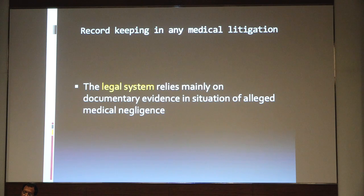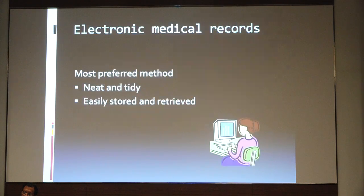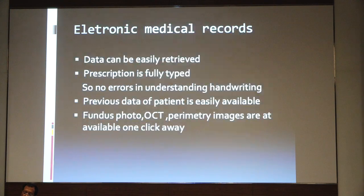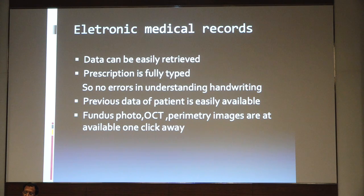There are various ways to keep records. The manual method occupies a large area and makes retrieval difficult — finding a record from 10 years back is nearly impossible. That's why electronic record systems have come into existence. It is the most preferred way to find records with just a click. Data can be easily retrieved, prescriptions are fully typed so handwriting is not an issue, previous patient data is easily available, and fundus photos, OCT, and perimetry images are available on one click.